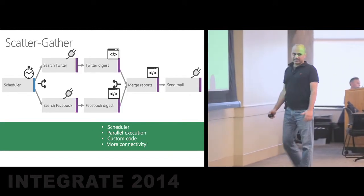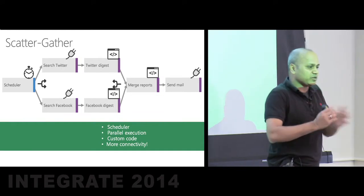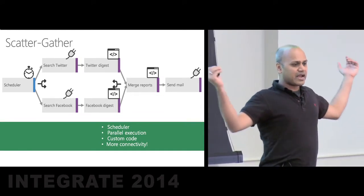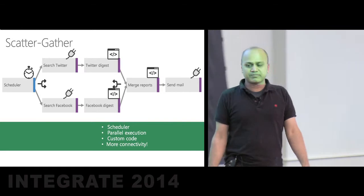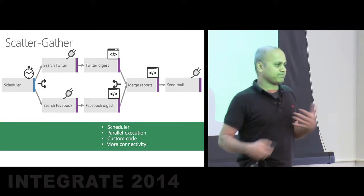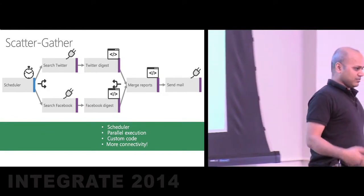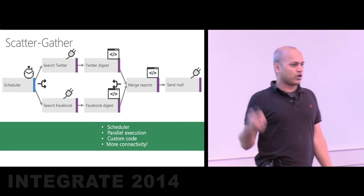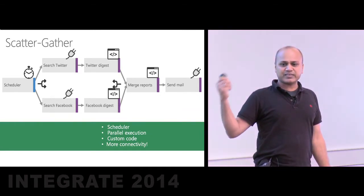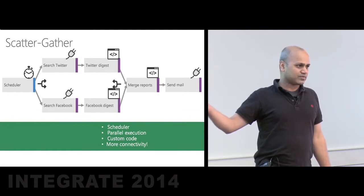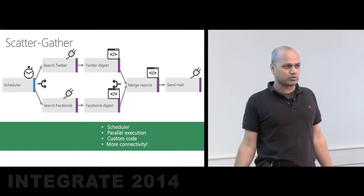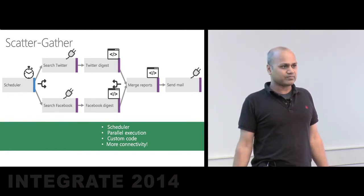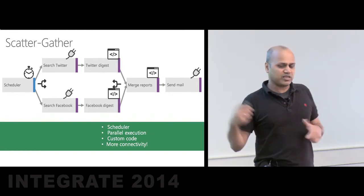The last pattern is scatter-gather: you dispatch requirements to multiple systems working in parallel, gather the data back, and produce one output. For example, a marketing campaign that scans Twitter and Facebook for a particular tag. This runs on a schedule — say, once every 24 hours — requiring a scheduler, parallel execution, connectors to those two systems, and the ability to run custom code to create a digest, merge the report, and send it out.